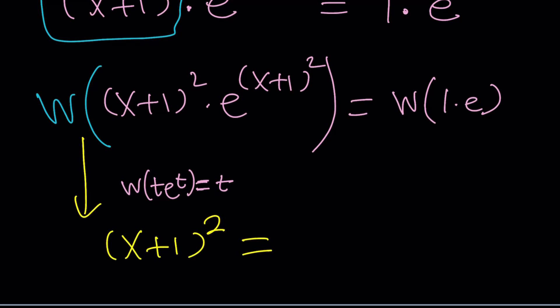And on the right-hand side, we can kind of write this as 1 times e to the power 1. So isn't that like t e to the t again? But this time t is 1. So it's just 1. Make sense? Easy, right? You input t e to the t and you get t. That's what it is. Great.